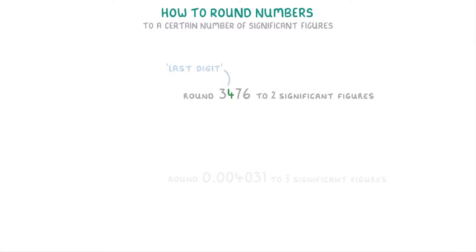We can call this the last digit, and this is the number that we have to round up or down. To figure out if we round it up or down though, we have to look at the next digit, so the seven, which we call the decider because it decides which way we round.